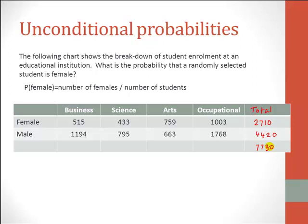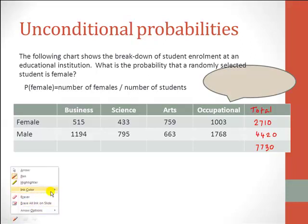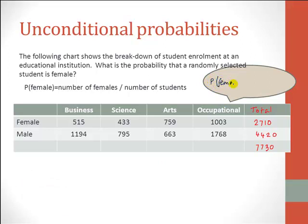Now we are ready to find the probability that a randomly selected student is female. Always make sure you write the event name and then the probability. So: probability that a randomly selected student is female equals 2710 divided by 7730 — the number of females in our population divided by the number of students in our population. So 2710 divided by 7730 is the required probability.